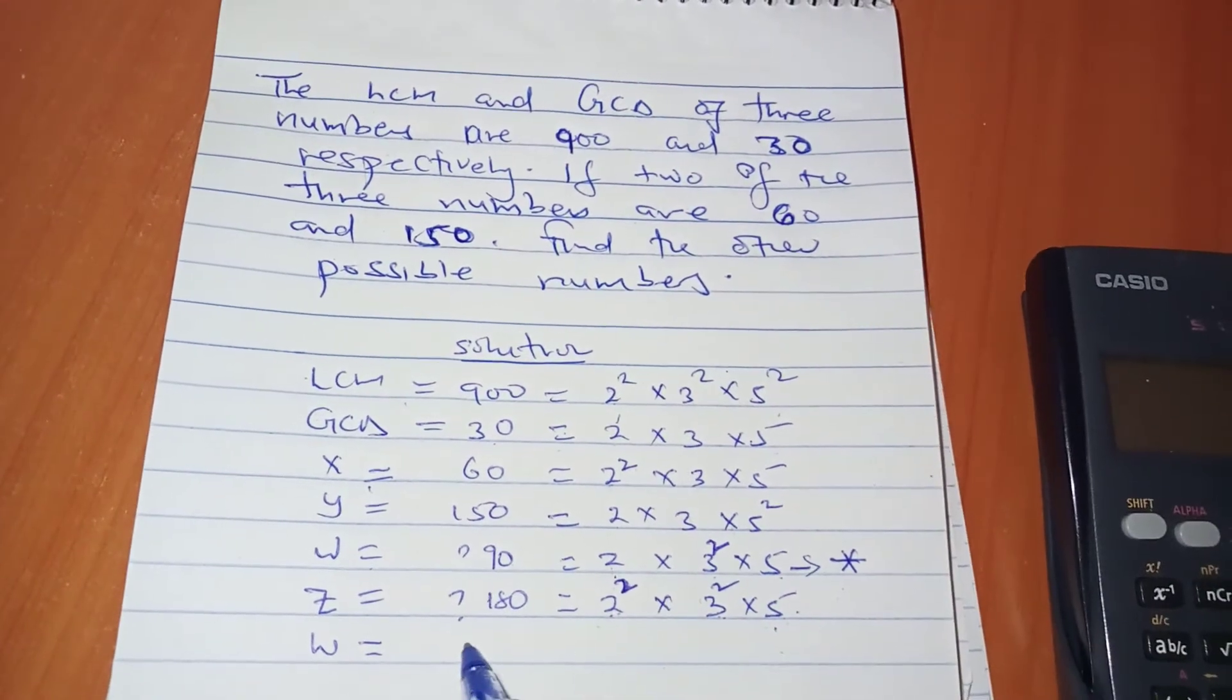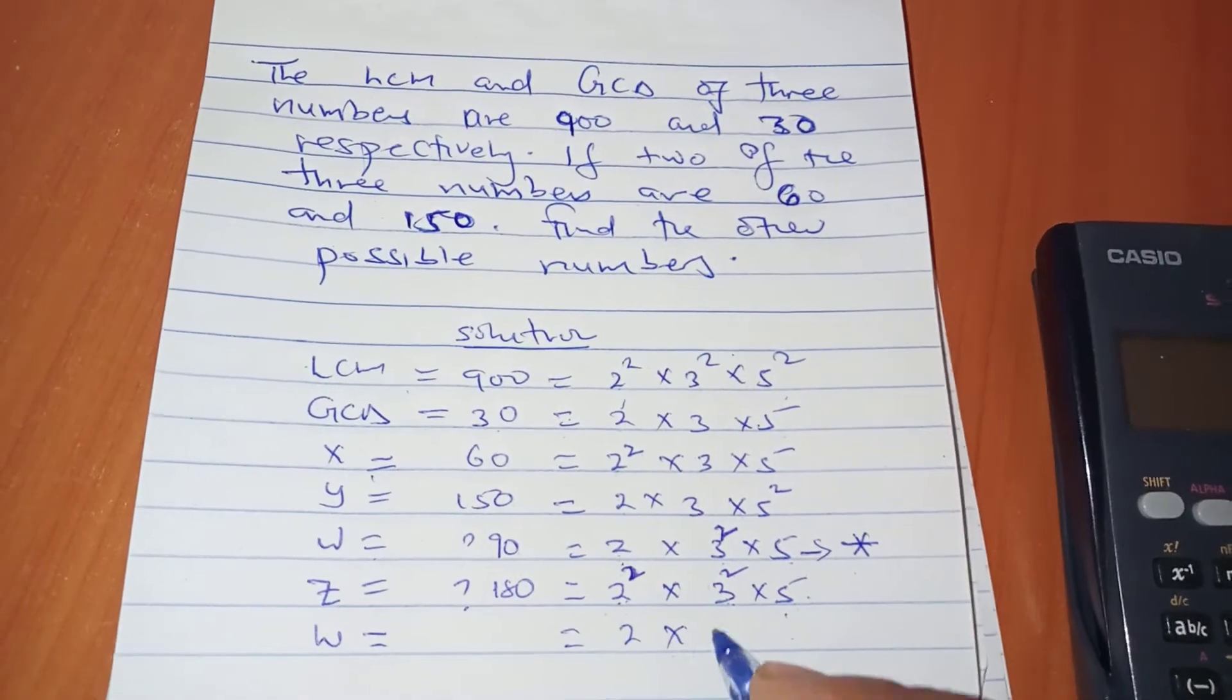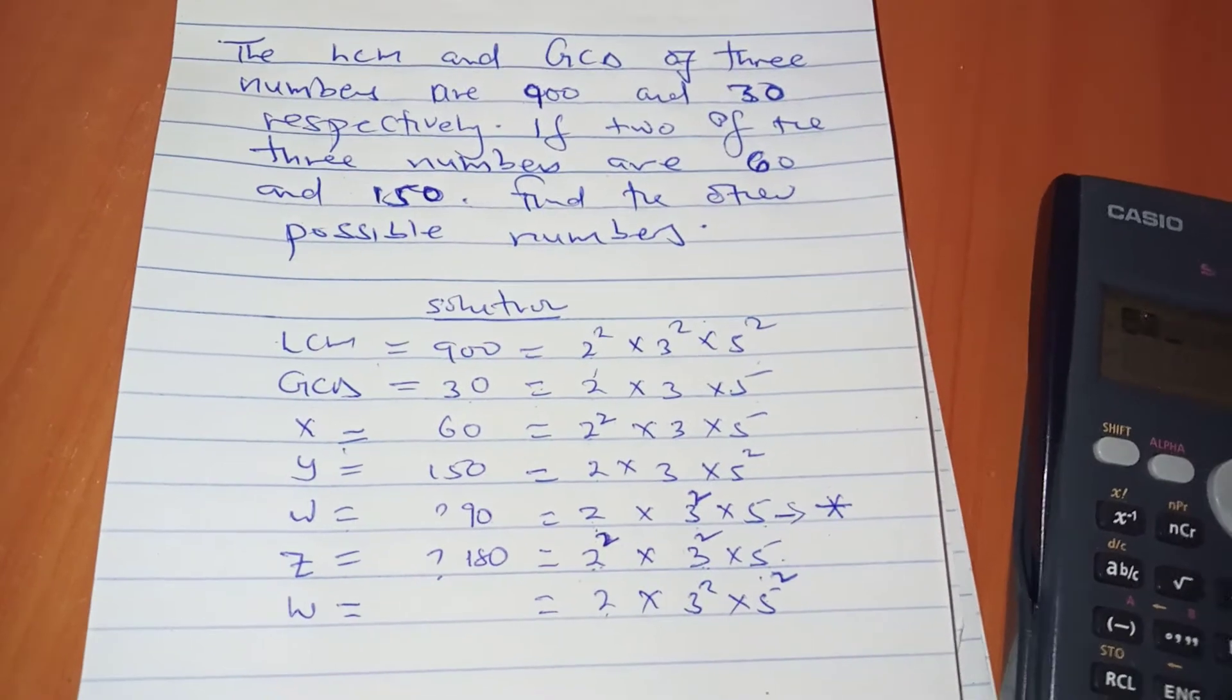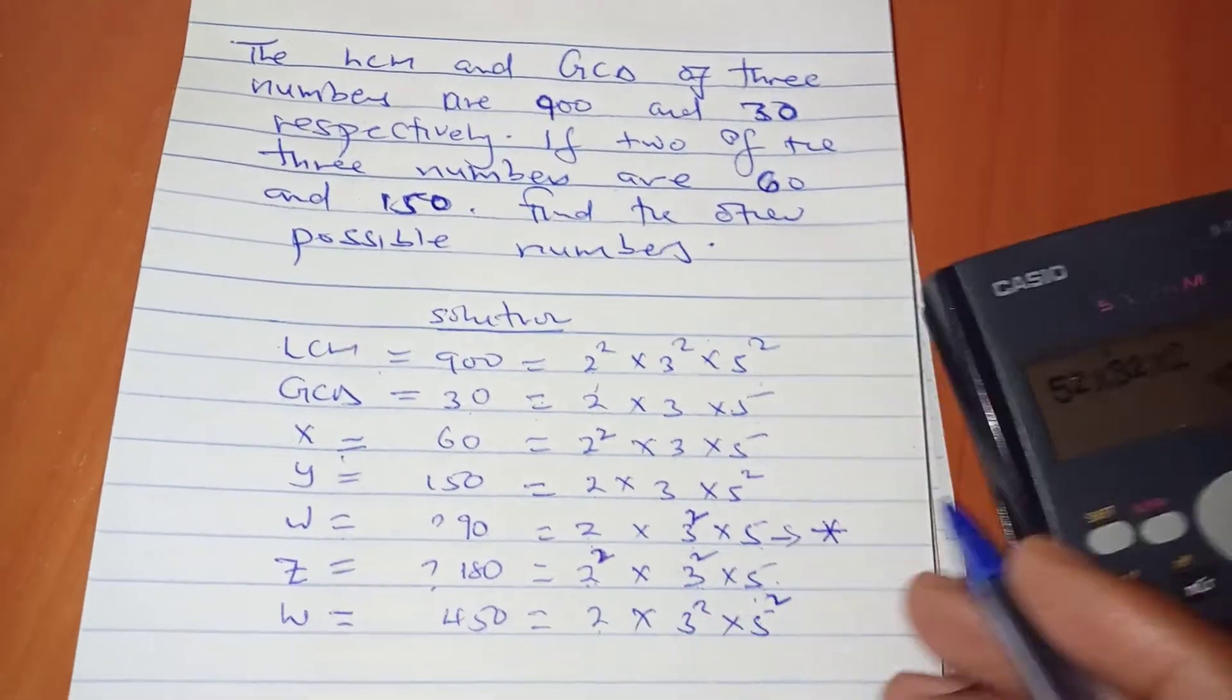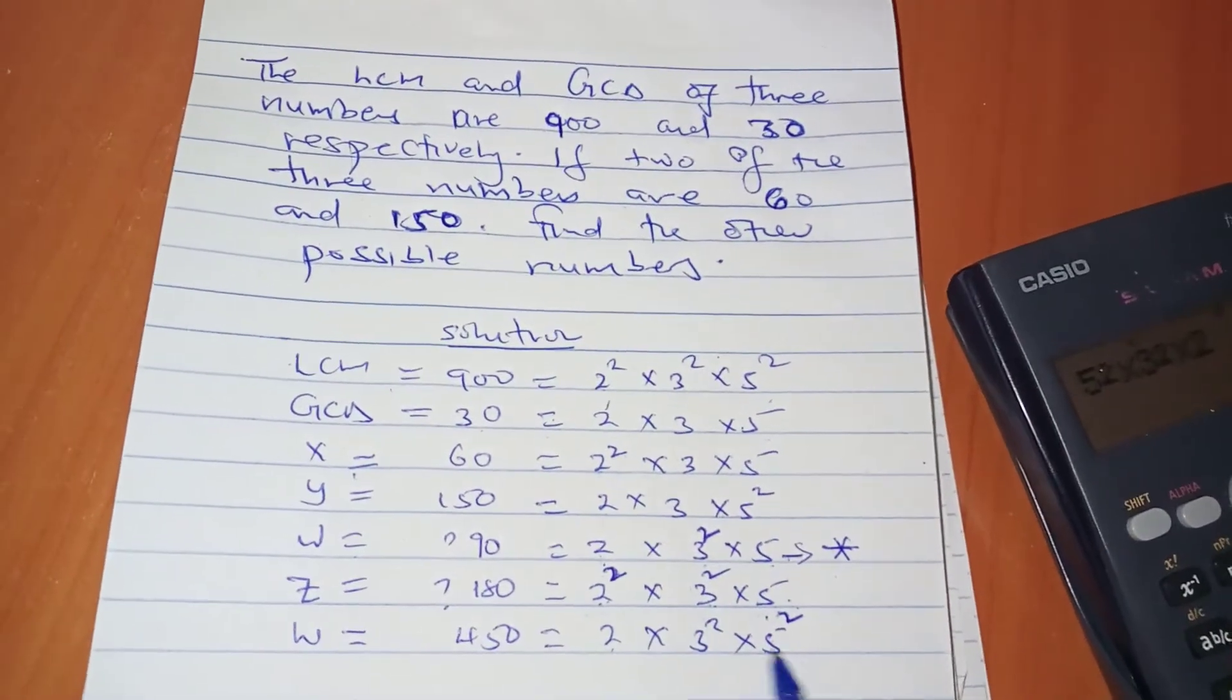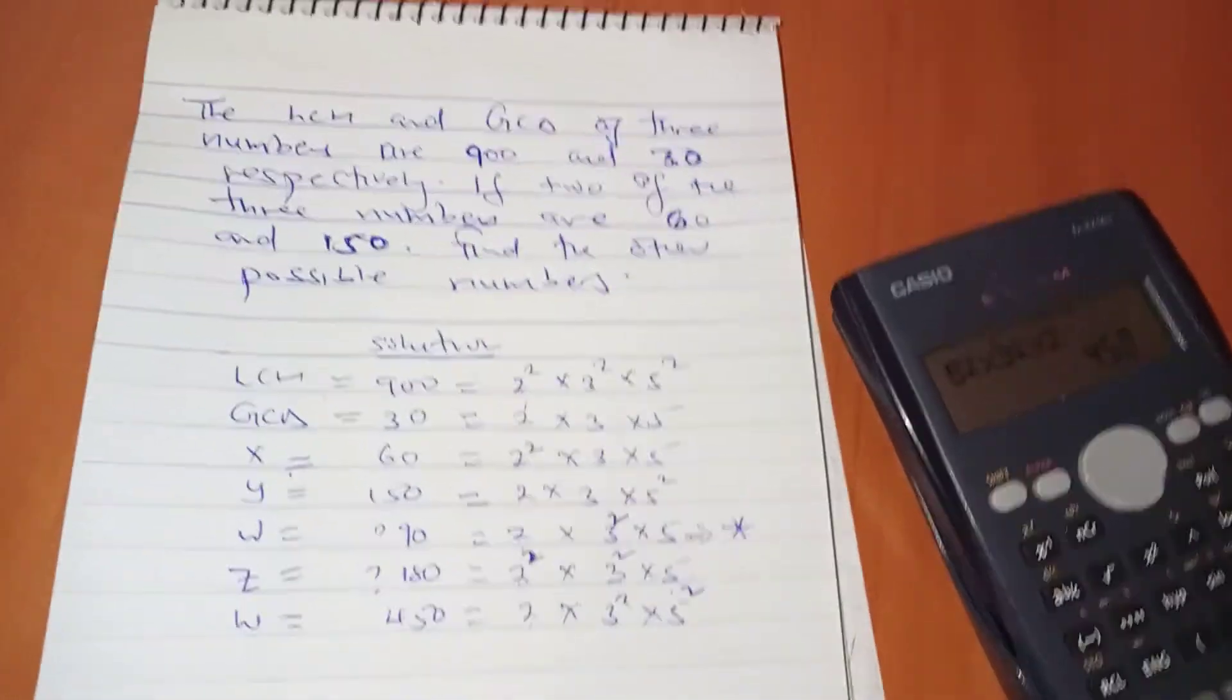You can determine another number because the question asks for other possible numbers. Minimum was 90, 180 is another one. What if I maintain 2¹ and put power 2 on the 5? The new number is 2 × 3² × 5² = 450. You must abide by the constraints: the GCD must always appear in all numbers, and any power you assign should not exceed the power in the LCM.